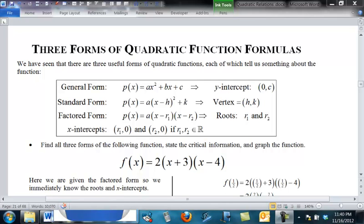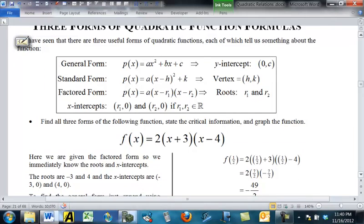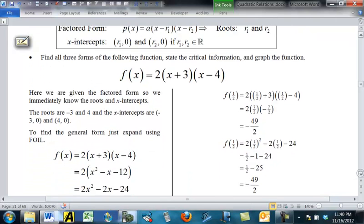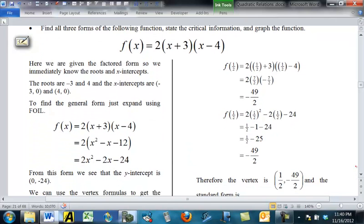We know how to convert from one form to the other two, and that's what we're going to practice right now. So I have one example of each here. If we start with the factored version, 2 times X plus 3 times X minus 4,